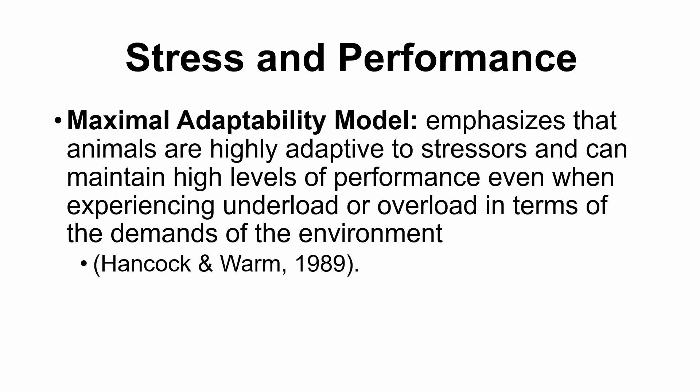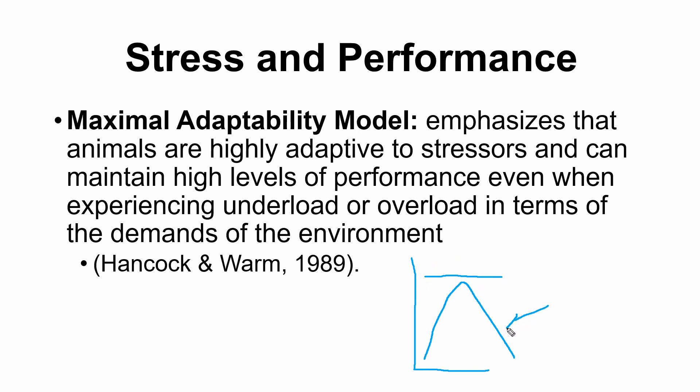In contrast to that idea of a moderate stress level being optimal, we sometimes see the maximal adaptability model. This emphasizes that animals, including humans, are highly adaptive to stressors and can maintain high levels of performance even when experiencing overload or underload in terms of environmental demands. Rather than the inverted U-curve, this model would expect to see a straight line — we perform optimally all the time because we are highly adaptable to both too little and too much environmental influence.